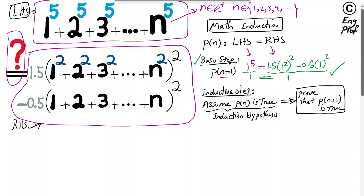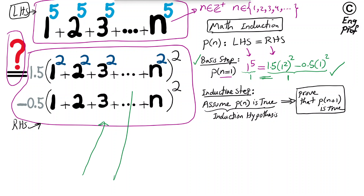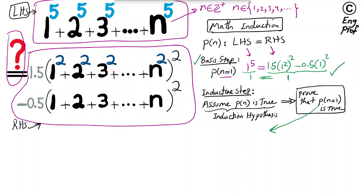Let's move on to the inductive step. We assume P(k) is true, then prove P(k+1) is true. So assuming the statement — left-hand side equals right-hand side — is P(n), and it's correct, we need to show that P(n+1) is true. P(n+1) on the left-hand side is 1⁵ + 2⁵ + 3⁵ + ... + n⁵ + (n+1)⁵.